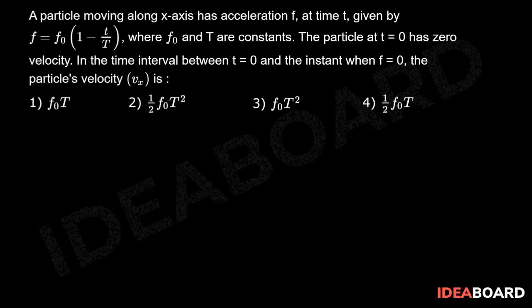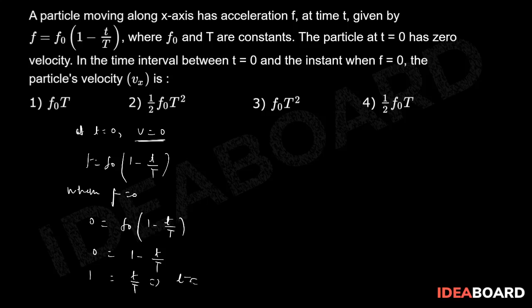First, the given conditions are: at t equals 0, v equals 0. This is given in the question, and f equals f₀(1 minus t upon T). Now let's find the time when f equals 0. When f equals 0, we have 0 equals f₀ into (1 minus t by T). From here, 1 minus t by T equals 0, so 1 equals t by T, which means t equals capital T.